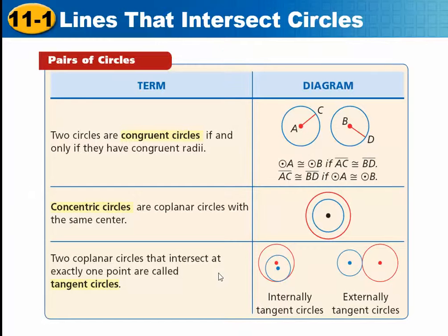Here's some more terms you need to know. Two circles are congruent circles if and only if they have congruent radii. They have to have the exact same radius in order to be congruent circles. That's really all they need to have in order to know they're congruent. Concentric circles are coplanar circles with the same center. They'll have different radii.